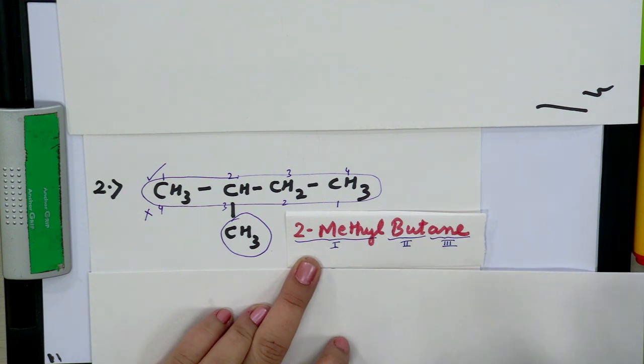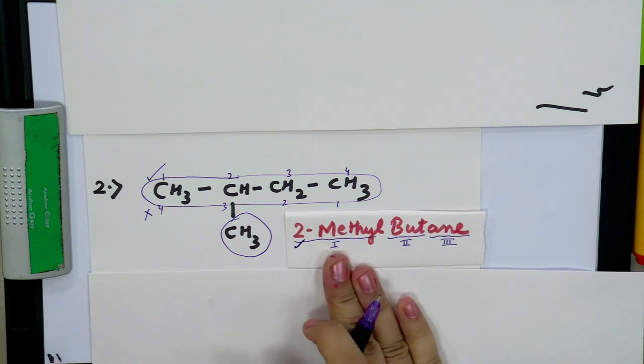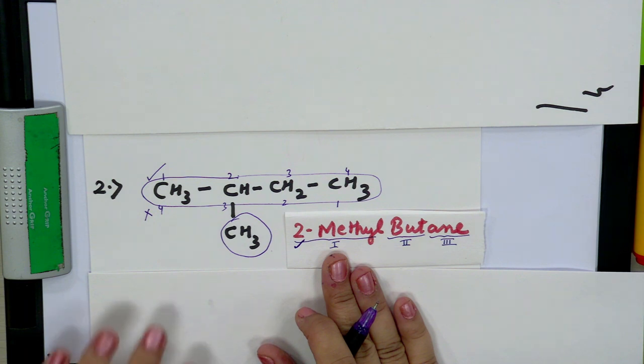Specifying the position is very, very necessary. Just as a mother would tell a child exactly which wire to find their shirt on, specifying position in nomenclature makes it easy to identify and locate the groups in a compound. So specifying position is very important, and this is the rule of IUPAC nomenclature.